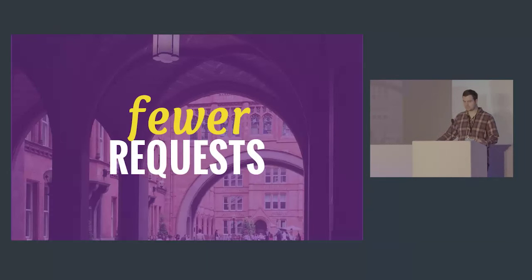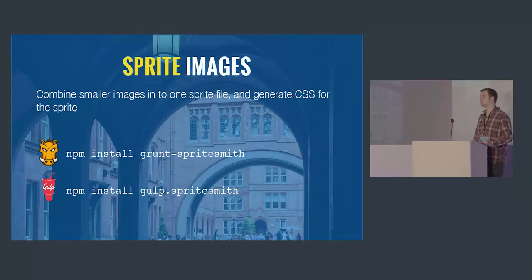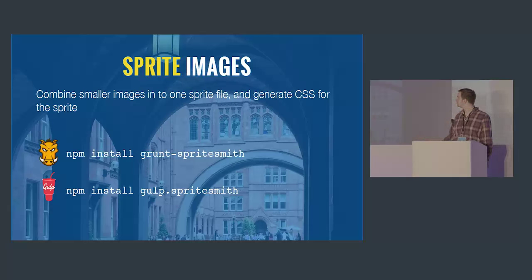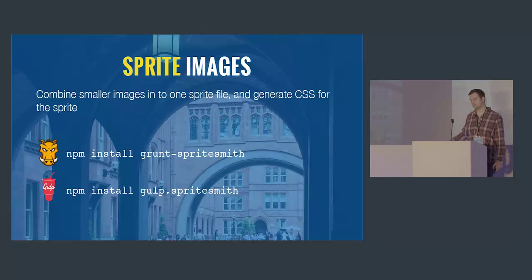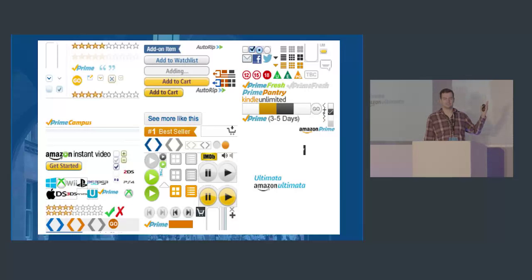That's smaller page size — let's talk about fewer requests. We've already spoken about concatenating files: joining all our CSS together or all our JavaScript together. We can also join all our images together, and there's nothing more fiddly than creating a sprite file in Photoshop — aligning each image carefully and working out background positioning in pixels. There's a task called Spritesmith that outputs the CSS with all the different background positions for our sprites automatically. All the major players use sprites — this is the Amazon sprite sheet — so it's definitely worth looking into.